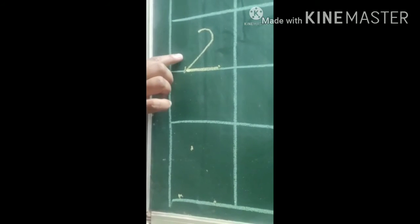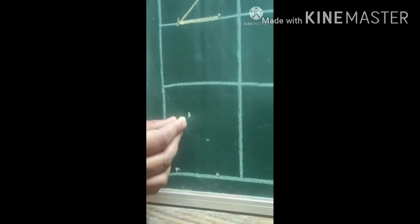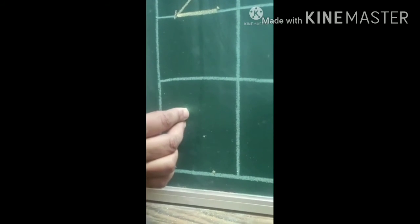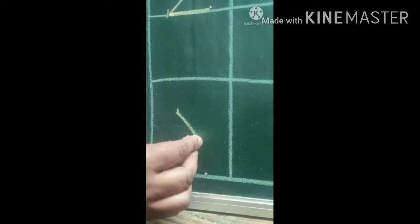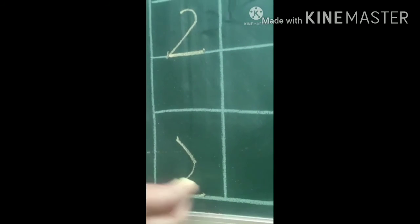If you find it difficult then put three dots like this. First make a slanting line, join it, and then bring it down and then take it back. This is two. What is this? Two.